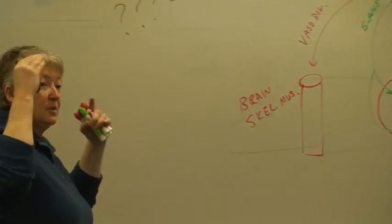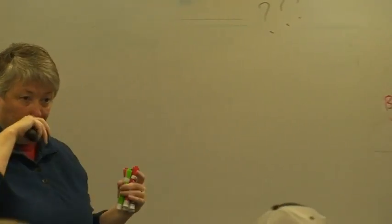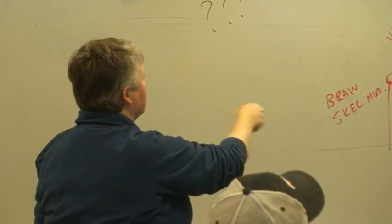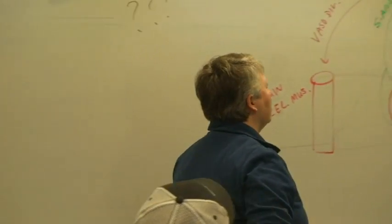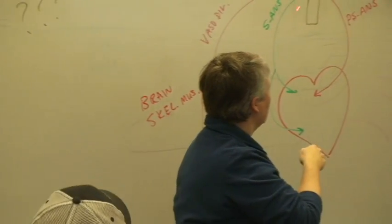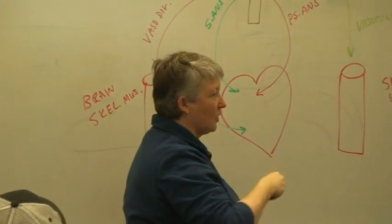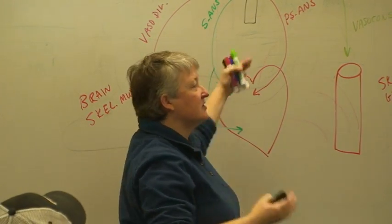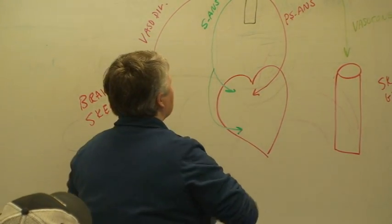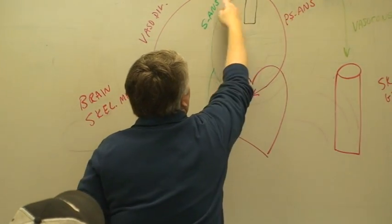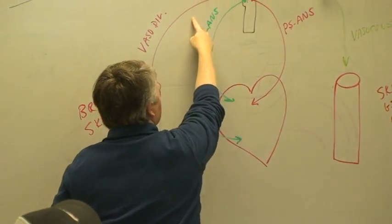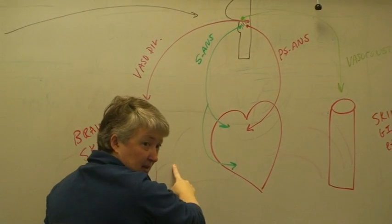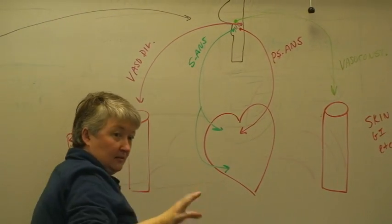Essentially, what we've been talking about is output to these structures from the medulla oblongata. Now, what we're going to talk about is the input — how does the medulla oblongata know which one of these neurons to send signals down? You've got a neuron stimulating the pre-ganglionic neuron stimulating the post-ganglionic neuron.